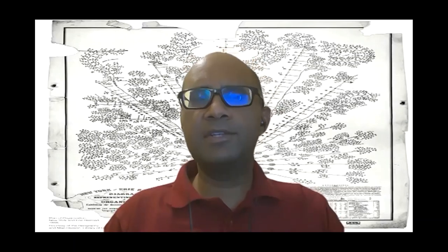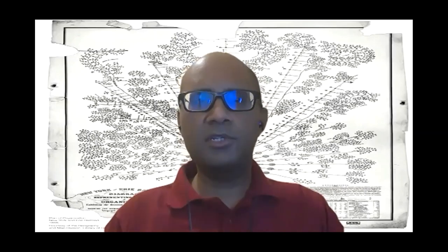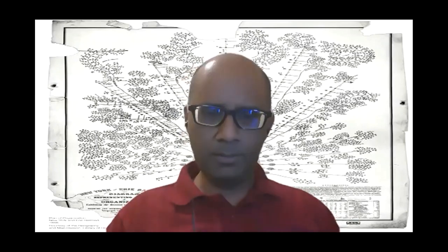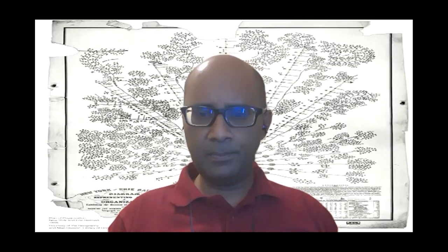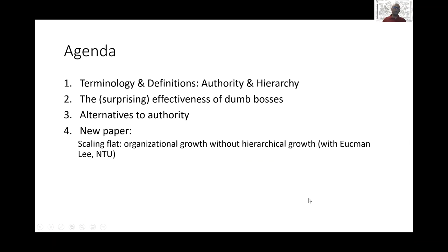Given the advances in the fourth industrial revolution — particularly intelligent automation — which might do many things that managerial hierarchies currently do, there is again no reason why hierarchy should be inevitable going forward. What my collaborators and I have been trying to do is understand how hierarchies work, how they don't work, what some substitutes for hierarchies are, and create a framework for disciplined speculation about what might happen to hierarchies as technologies evolve. That's the broad theme of today's discussion.